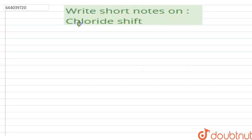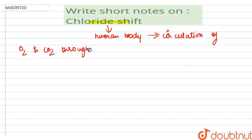Chloride shift is a process which occurs in the human body during the circulation of oxygen and carbon dioxide through the blood. The carbon dioxide is taken up by the red blood cells.